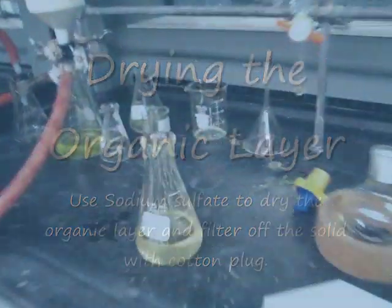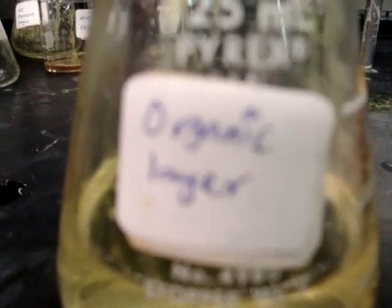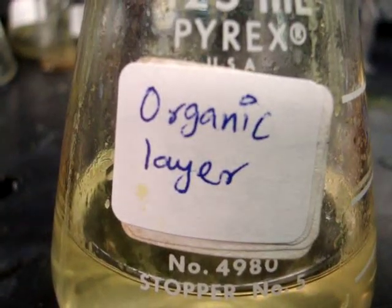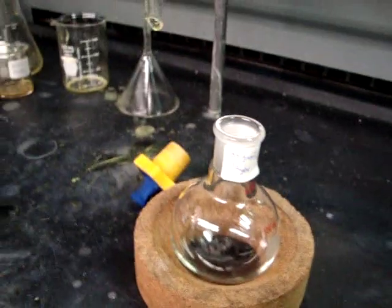Once you've separated out both of your aqueous layers, you're going to have left your organic layer with your biphenyl. To remove the water from the biphenyl, you're going to need to add sodium sulfate and then filter it through a cotton plug into your round bottom flask.